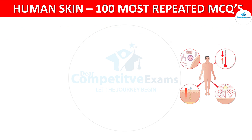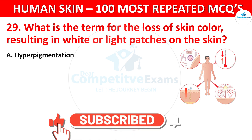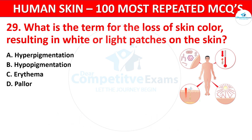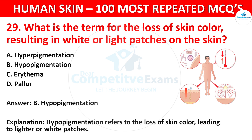Next question. What is the term for the loss of skin color resulting in white or light patches on the skin? Your options: Hyperpigmentation, Hypopigmentation, Arrhythmia, or Pallor. The correct answer is Hypopigmentation. Hypopigmentation refers to the loss of skin color, leading to lighter or white patches.